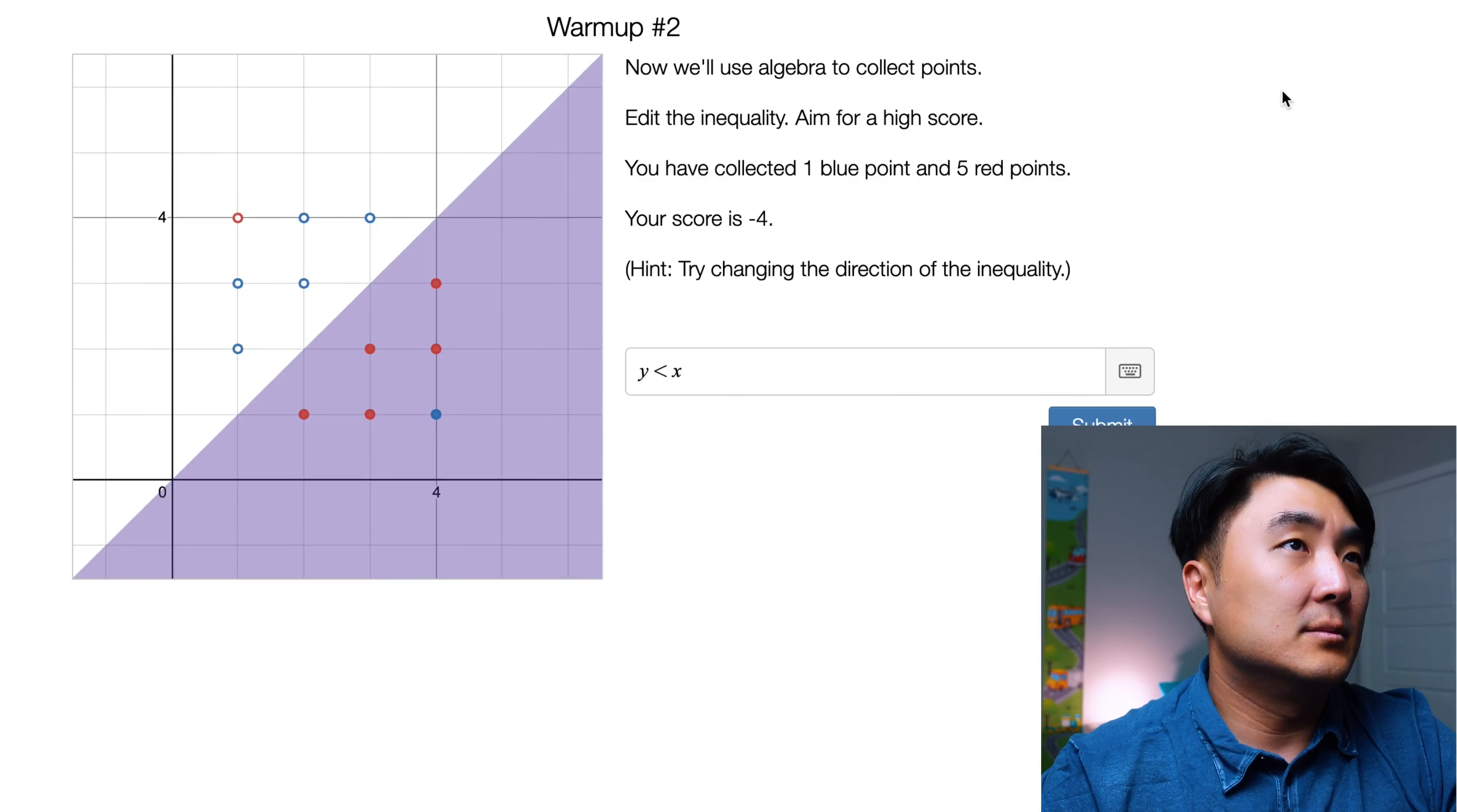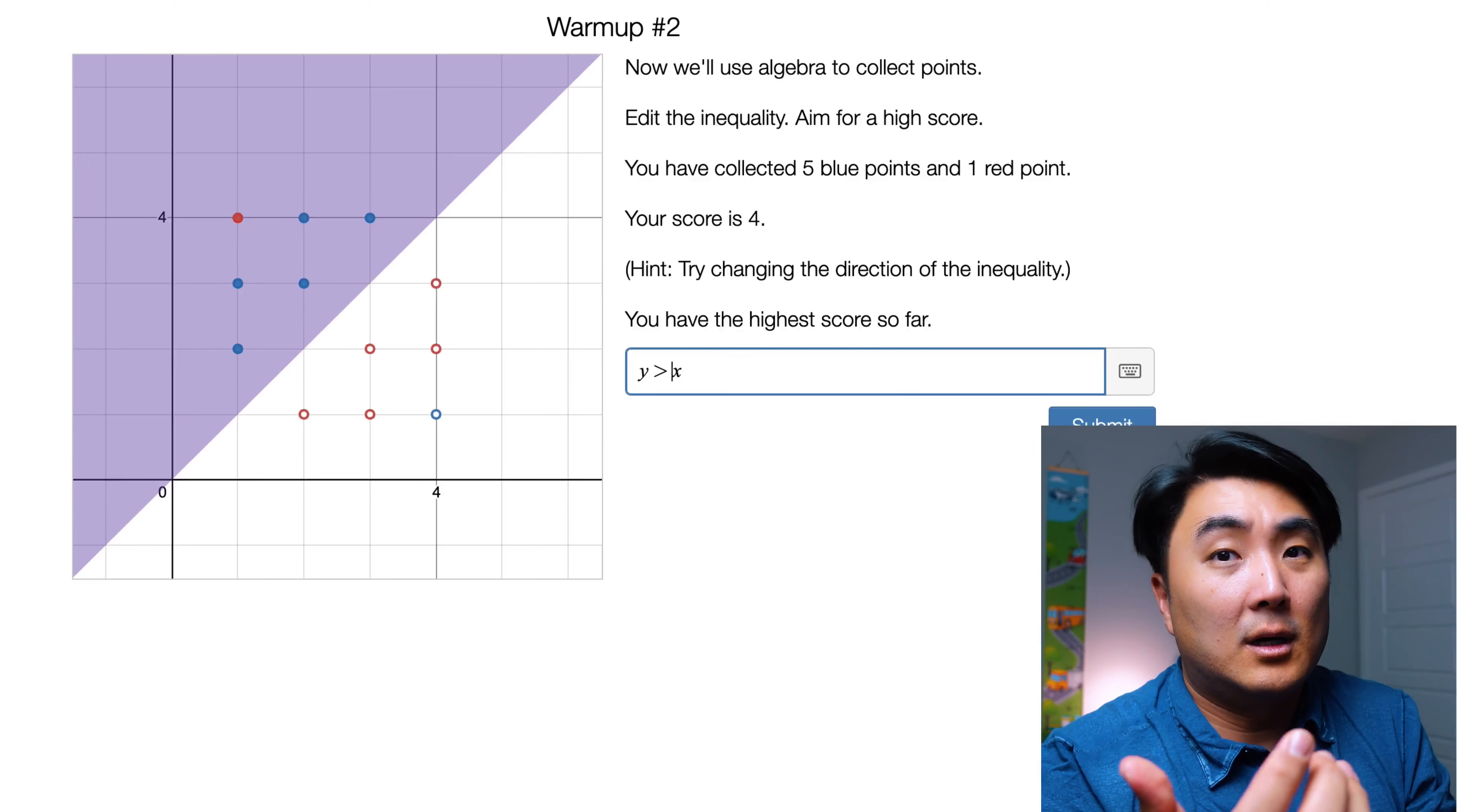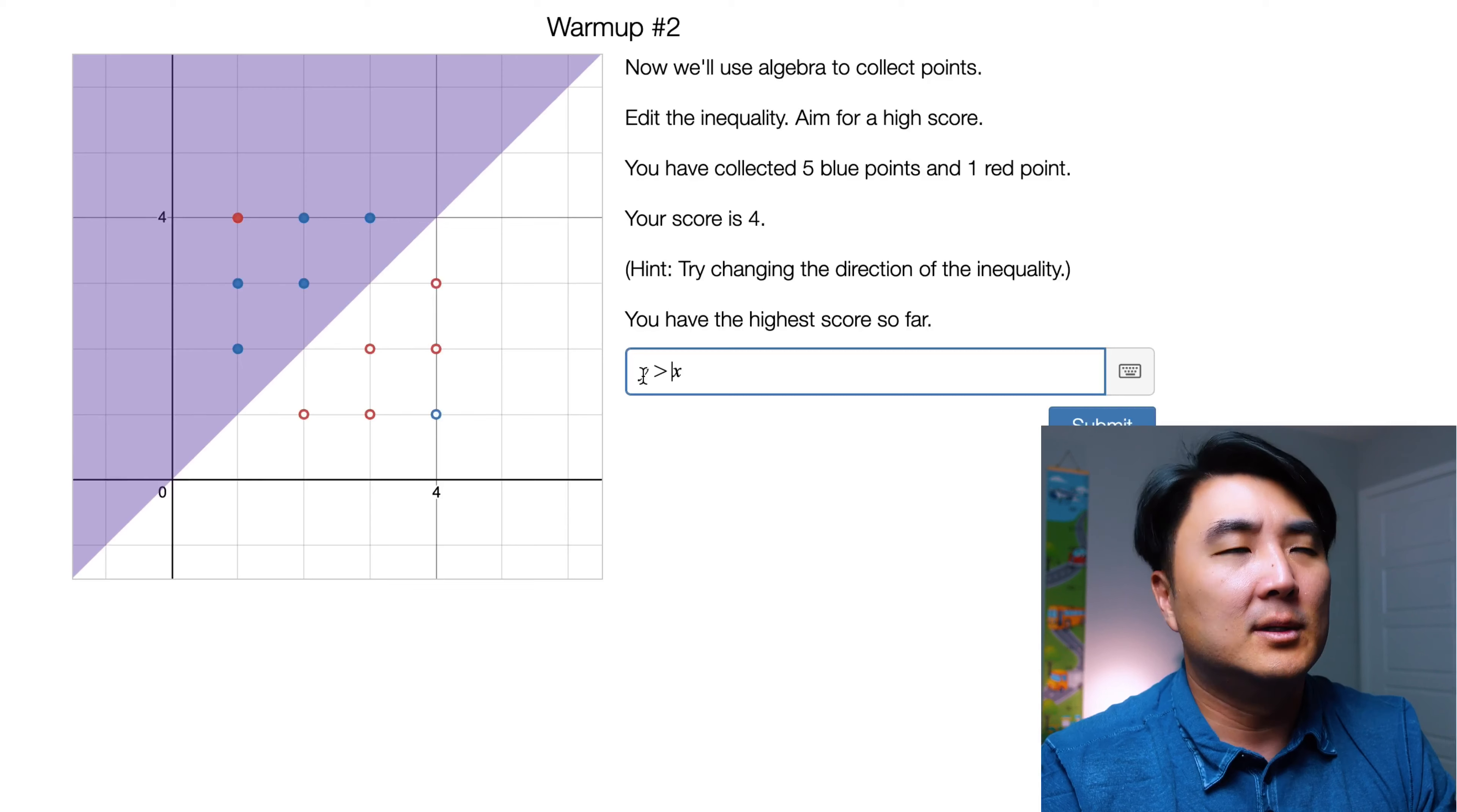Here's screen two. Now we'll use algebra to collect the points, edit the inequality and high score. So they give you a hint here. Try changing the direction of the inequality. So when I said that you should have a pretty good grasp of inequalities, I guess they actually wanted to give you hints. So if you didn't know, if you change the direction of the inequality, it changes which side you shade, right? And that's typically the hardest part of all this, right? Which side do you shade? How do you know, Matt, which side to shade?